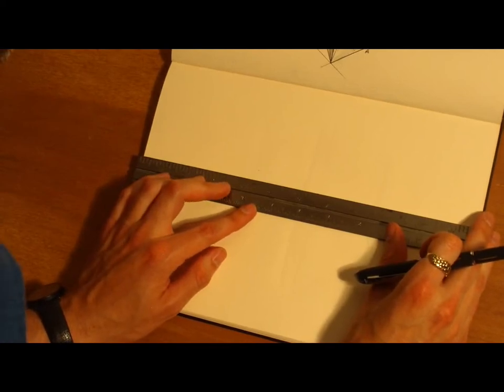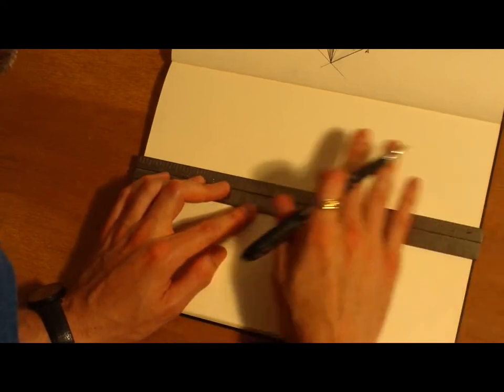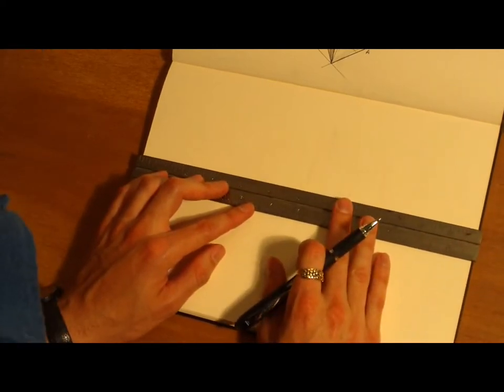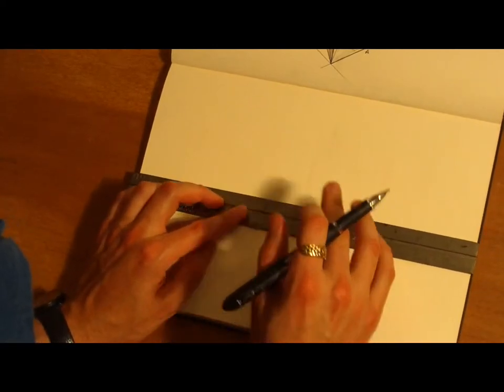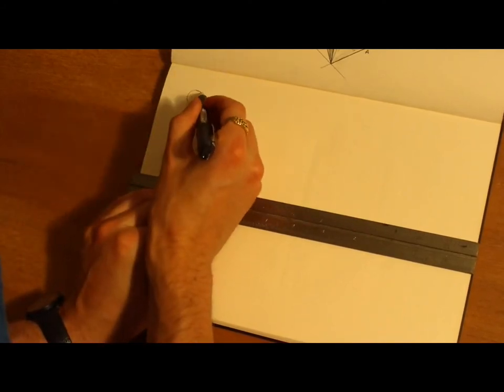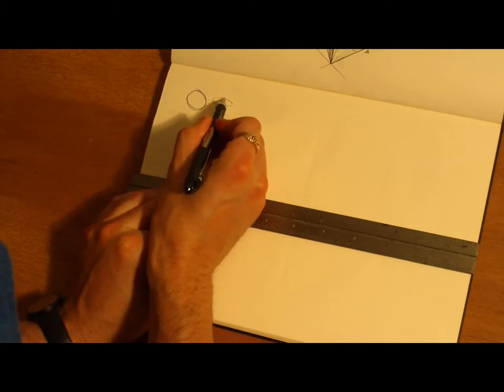We're going to do a cylinder, but I was thinking originally that we should do it in two-point perspective, but there's really no point, because whether you're in one-point or two-point perspective, a circle in perspective is always going to be an ellipse.